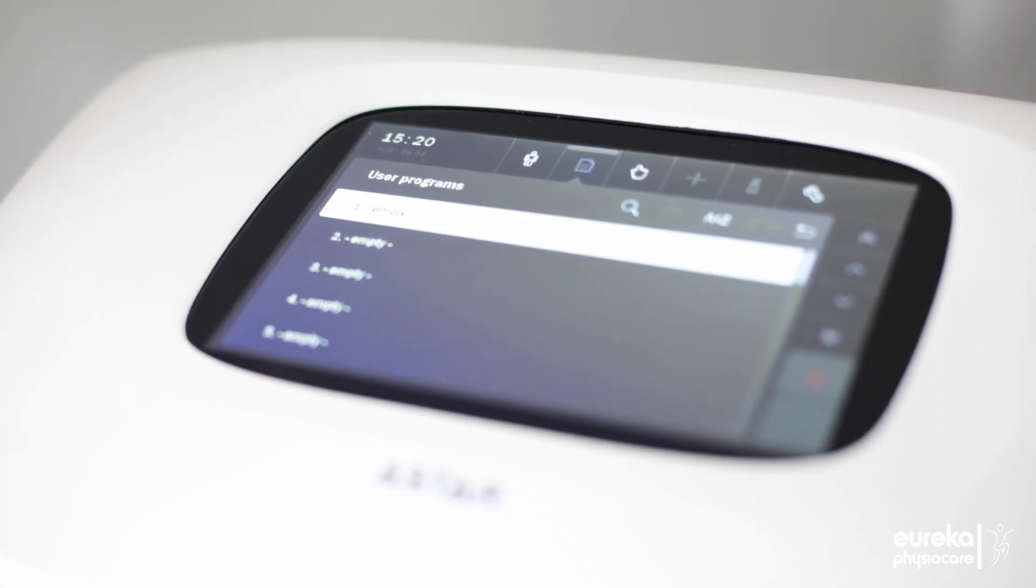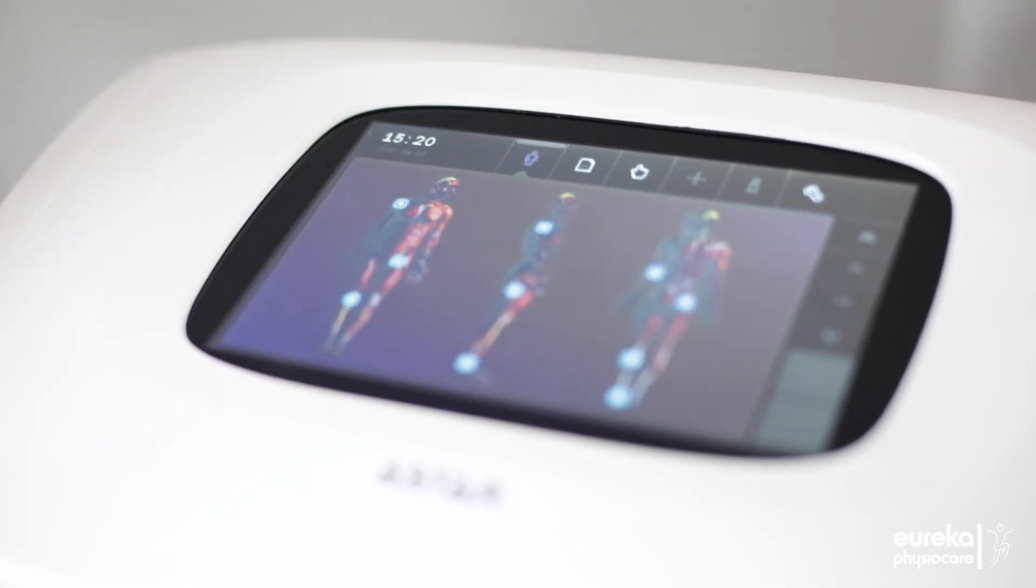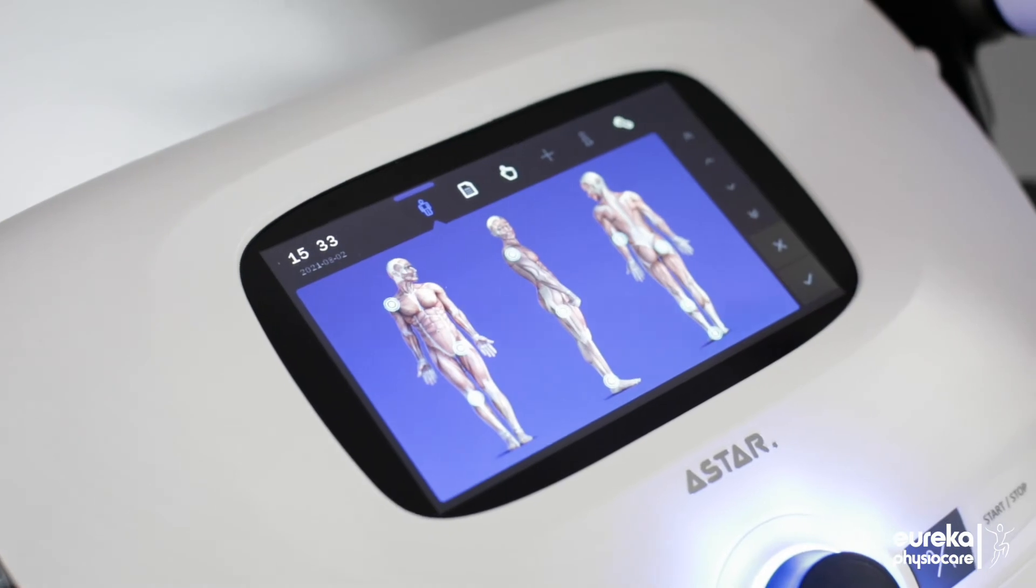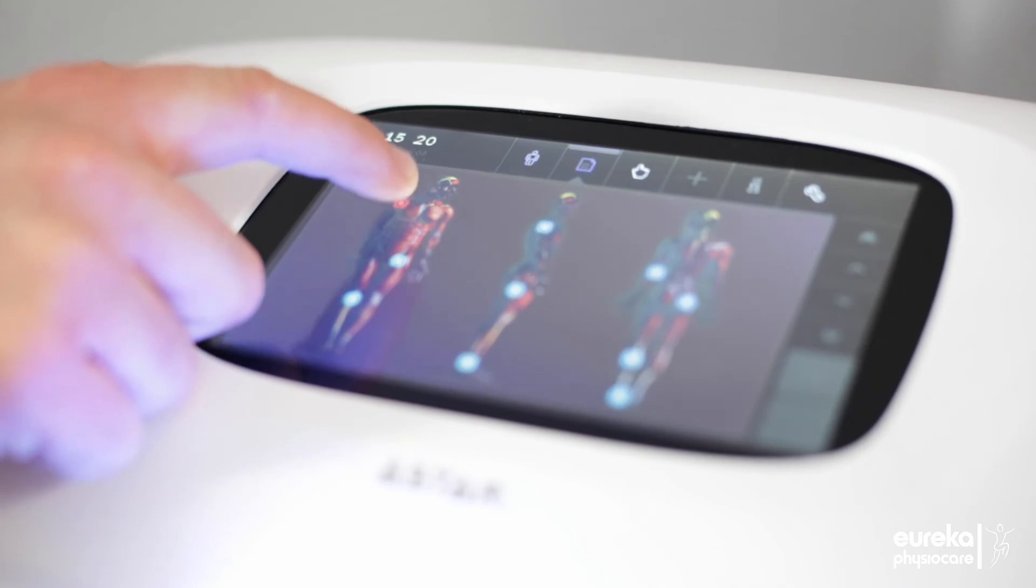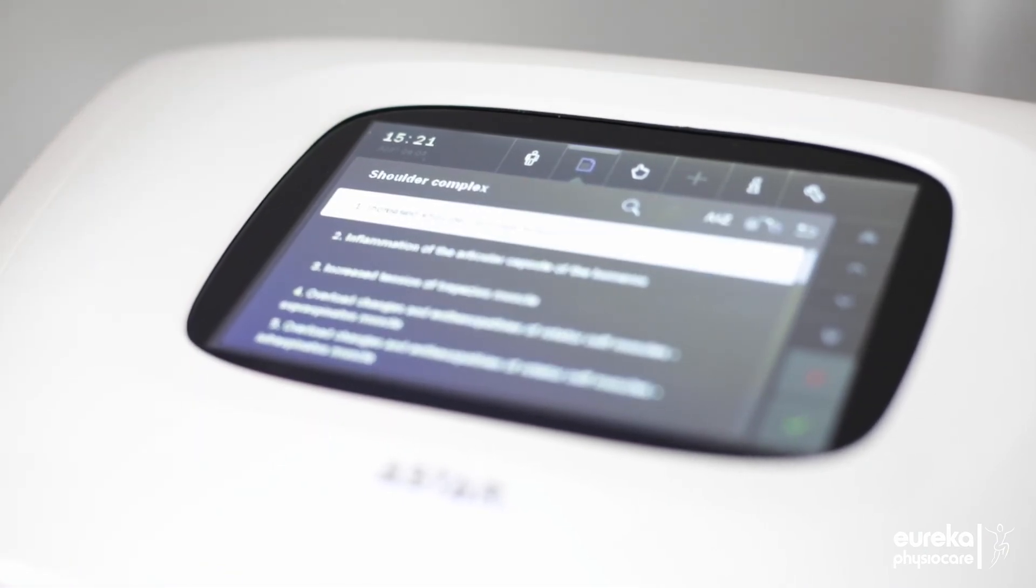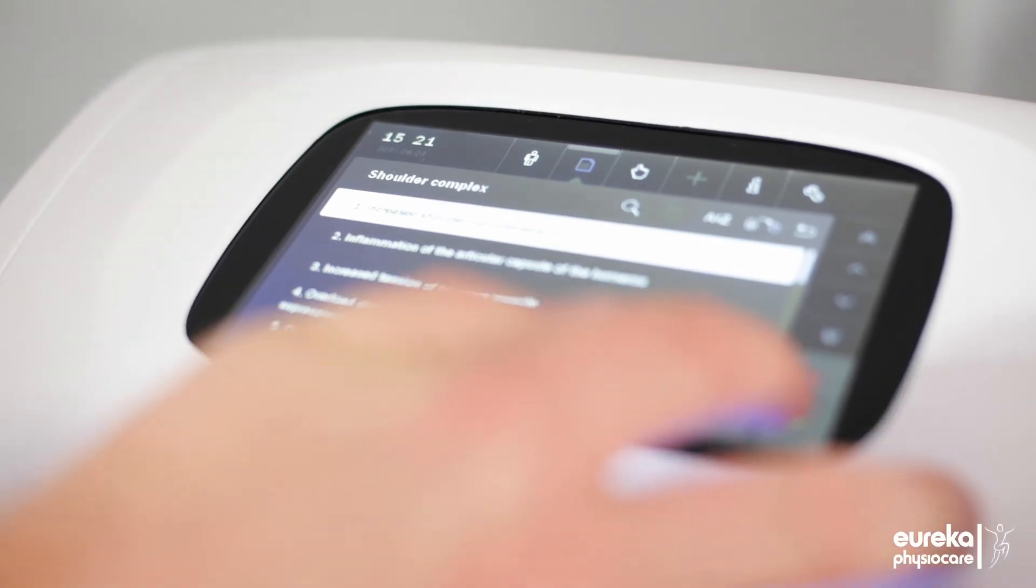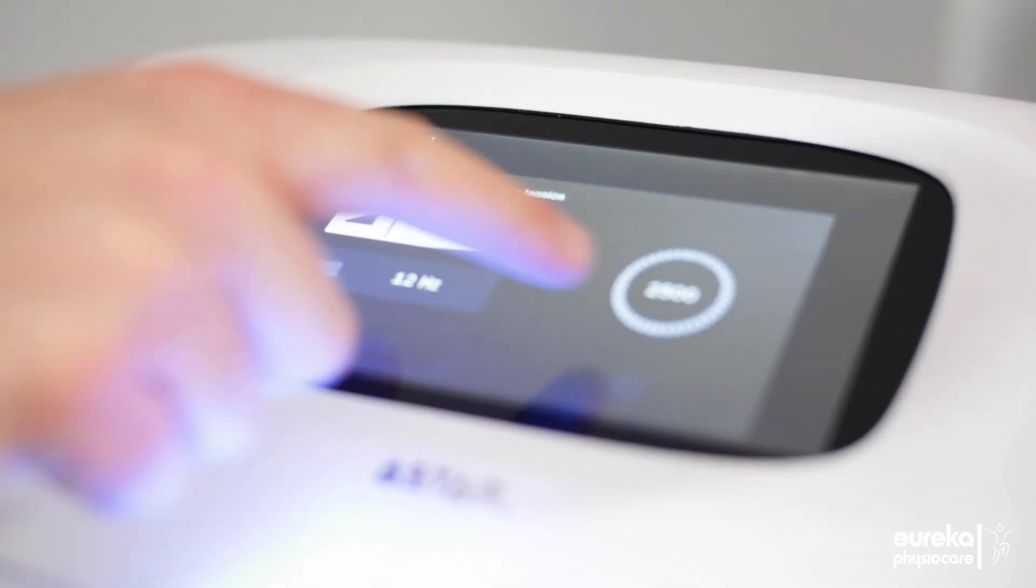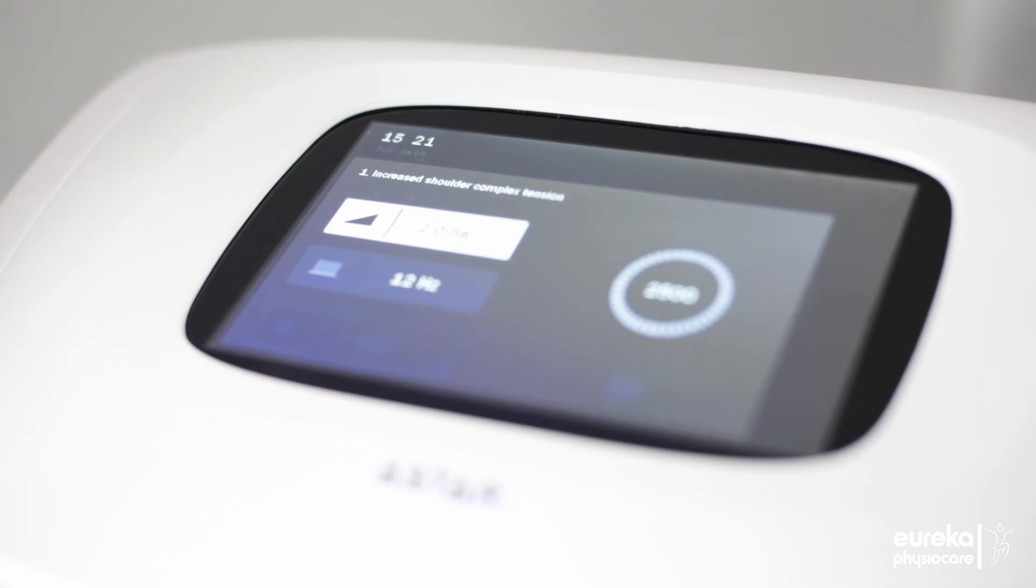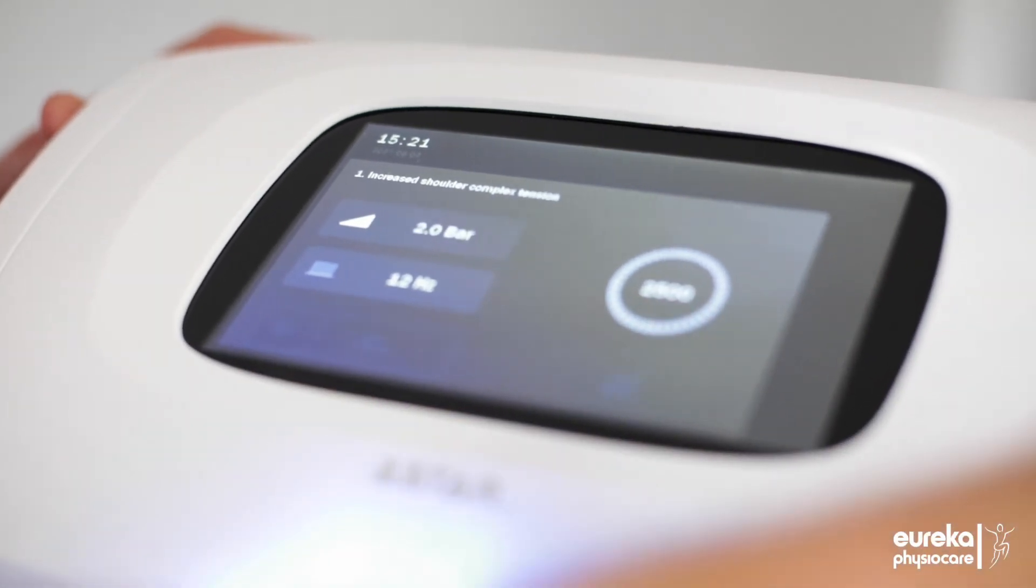The preset user programs can also be accessed by the anatomical mode which allows you to select the area of the body that you might be treating, and this will bring up a list of the preset programs for that body area. You can then, as with the other preset programs, load that information and it pre-populates the bar pressure, the hertz, and the number of shocks ready for you to start.